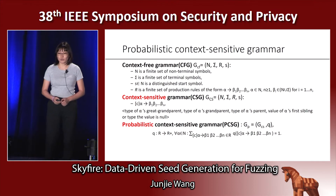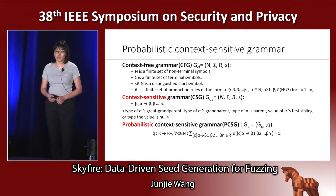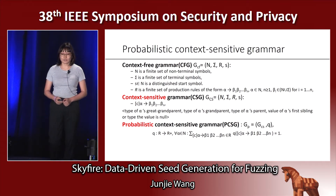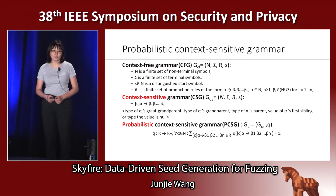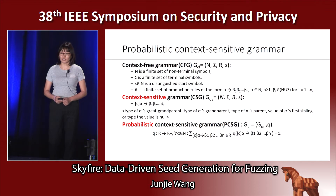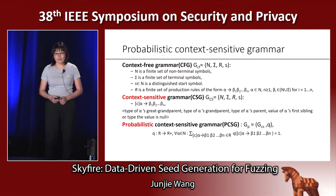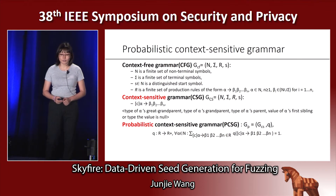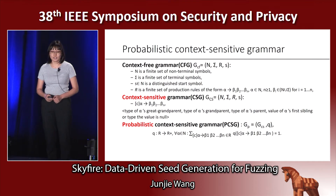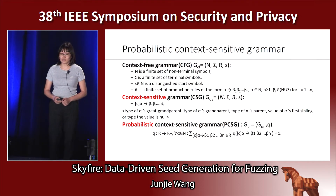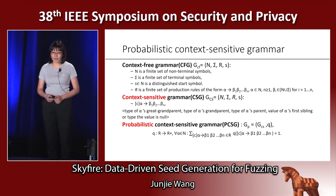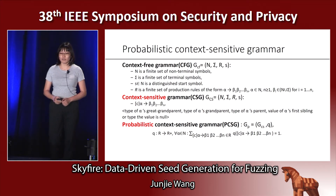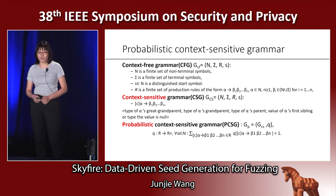Context-free grammar is a finite set of production rules of the form alpha extends to a sequence of beta, where alpha belongs to a set of non-terminal symbols and beta belongs to the union of non-terminal and terminal symbols. To model semantic rules, we propose context-sensitive grammar, which adds a context to each production rule. The context includes the type of alpha's grandparent, type of alpha's parent, and the value of alpha's first sibling and its type if the value is known.